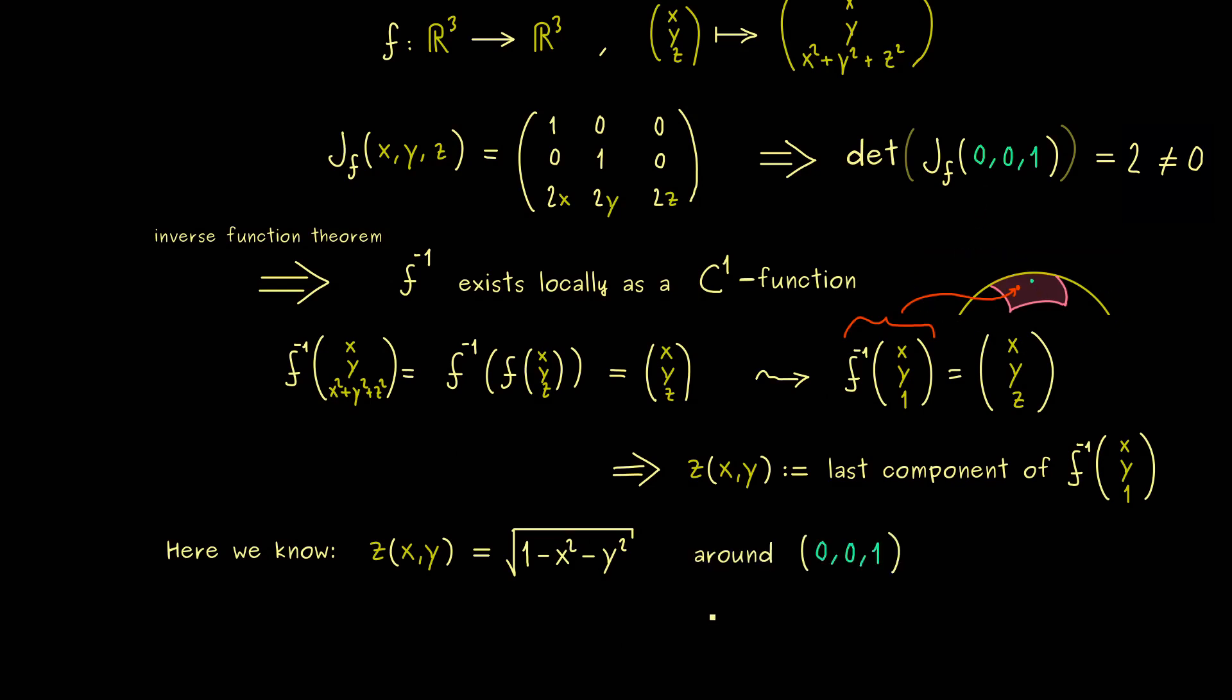This is how we can locally solve the equation around the north pole. So also here it's important to remember that this does not work globally, but just around the point. Indeed, here you can make it work for the whole north hemisphere. Okay, so with that you have seen one concrete example of the application of the inverse function theorem.